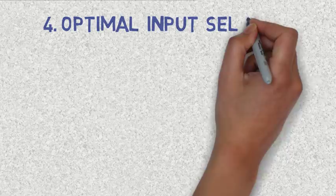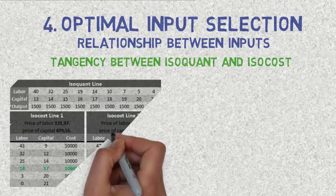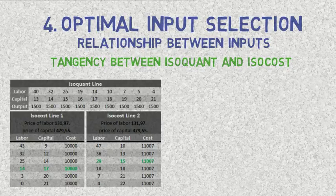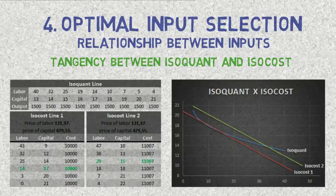Producers can maximize their profits not only by earning more, but also by spending less — producing as much as possible with as little investment as possible. In order to achieve optimal input selection, it is important to understand the relationship between different inputs. In economics, capital refers to machines, buildings, tools, and equipment. Imagine that a producer investigates how many workers and machines are necessary to produce 1,500 pounds of output. He may find that 40 workers and 13 machines, or alternatively 32 workers and 14 machines, achieve this level. In fact, there are 9 different combinations of workers and machines, and the curve created using these combinations is called an isoquant.